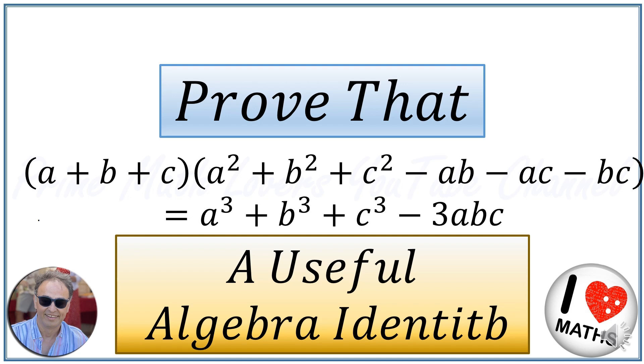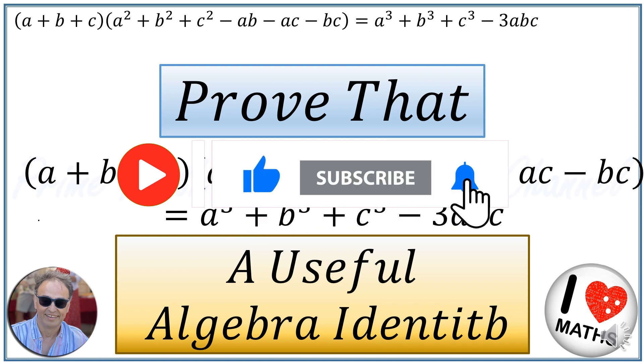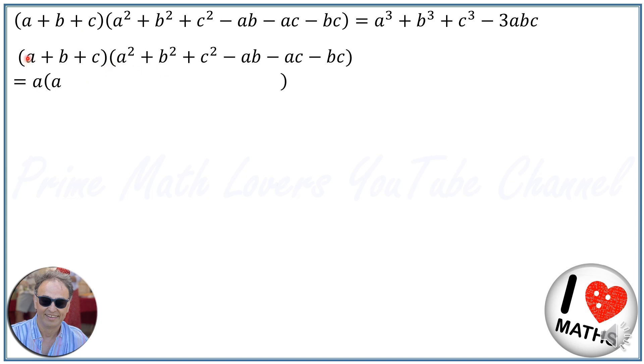Okay, to prove this I'll just expand these expressions and the result will be a times these expressions: a squared plus b squared plus c squared minus ab minus ac minus bc. Then b times these expressions and c times these expressions.